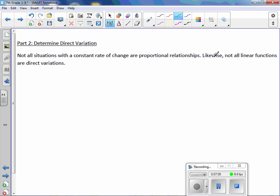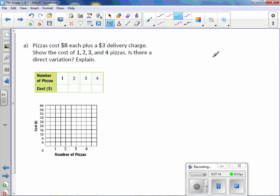Not all situations with a constant rate of change are proportional relationships. Likewise, not all linear functions are direct variations. Pizzas cost $8 each plus a $3 delivery charge. Show the cost of 1, 2, 3, and 4 pizzas. Is there a direct variation? Explain.